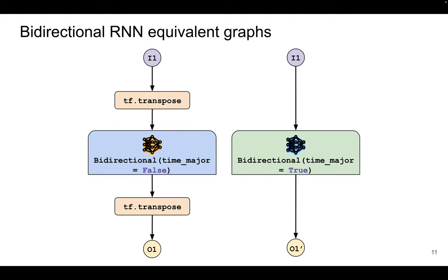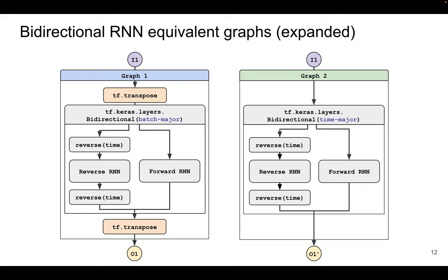These equivalent graphs are simplified for illustration. The bidirectional RNN consists of two independent RNNs: a forward RNN and a reverse RNN. The forward RNN processes the input in normal order, and the reverse RNN in reverse order. Since the output of the reverse RNN is not in the correct order, it needs to be reversed. The bug is in graph 2: the reverse function should be performed on the time dimension instead of the batch dimension. The API's batch major mode correctly uses the reverse function on the time dimension, but its time major mode incorrectly reverses the batch dimension instead, resulting in incorrect output.